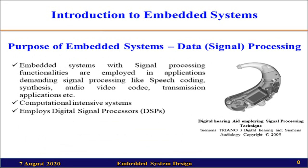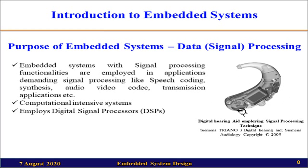The third purpose is data or signal processing. Embedded systems with signal processing functionalities are employed in applications that demand signal processing, such as speech coding, synthesis, or audio/video coding and transmission. These are computationally very intensive systems and may employ a digital signal processor (DSP). An example is a digital hearing aid, where the voice is amplified by the device so that a person who is unable to hear properly can hear what others are saying.